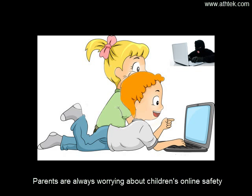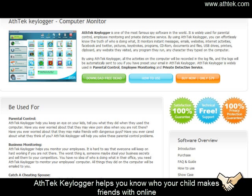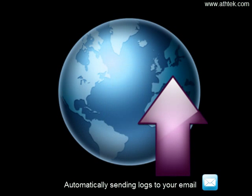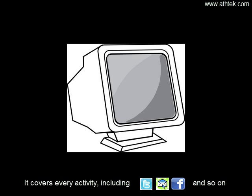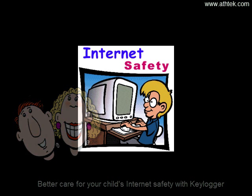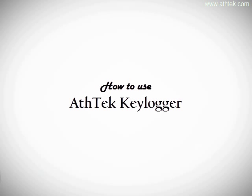Parents are always worrying about children's online safety. The thought that they may be involved in internet crime startles them. This keylogger helps you know who your child makes friends with online. Silent mode enables you to get records without drawing attention, automatically sending logs to your email. It covers every activity including Twitter, email, Facebook, and so on. Better care for your child's internet safety with keylogger. Pay attention: we only provide a tool — you must weigh the power of law before using keylogger.